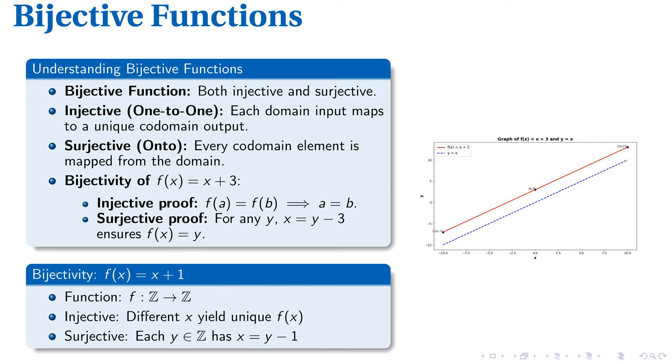Bijective functions marry injective and surjective properties, exemplifying a perfect one-to-one correspondence between domain and codomain. Take, for instance, our function f of x equals x plus 3. By definition of injective, if f of a equals f of b, then a must be b. To demonstrate surjectivity, we adjust to x equals y minus 3, confirming f of x equals y for every y.